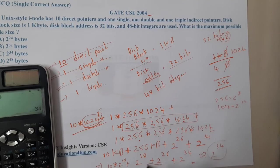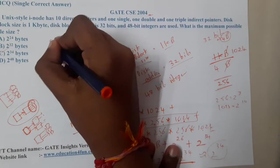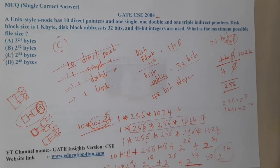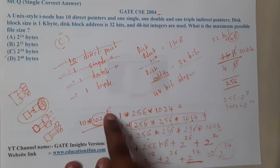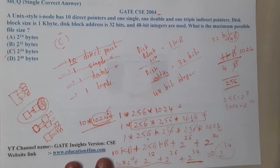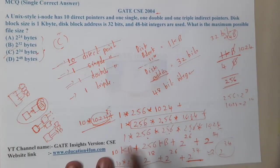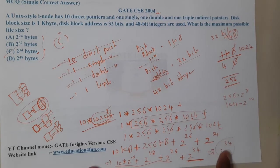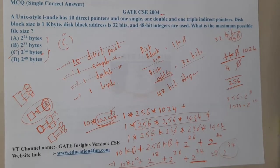The maximum file size is approximately 2^34, because the lower-order terms like 2^26 are negligible compared to 2^34. So the final answer is option C. A useful trick: you can save time by directly calculating only the last (triple indirect) layer, since it dominates all other layers.